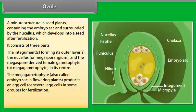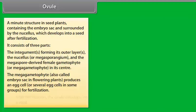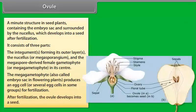The megagametophyte, also called the embryo sac in flowering plants, produces an egg cell — or several egg cells in some groups — for fertilization. After fertilization, the ovule develops into a seed.